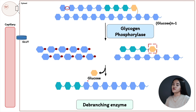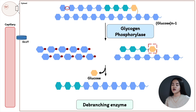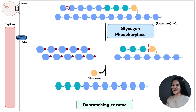That remaining glucose unit is cut and released as free glucose. This is done by the glucosidase activity of the debranching enzyme. To clarify: the transferase activity transfers the three glucose residues to another chain, while the glucosidase activity releases the final glucose molecule as free glucose.